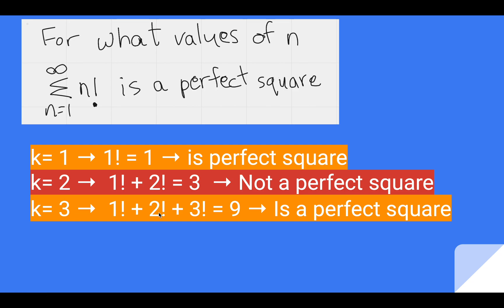And for k equals 3, it is 1 factorial plus 2 factorial plus 3 factorial, which is 9, is a perfect square.